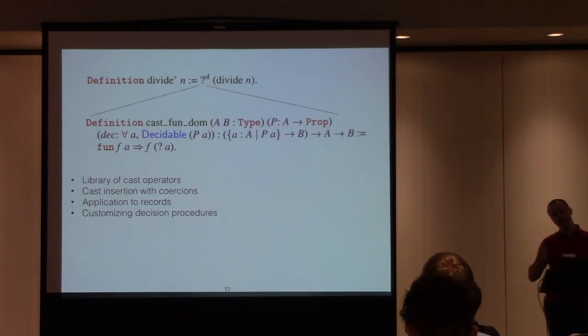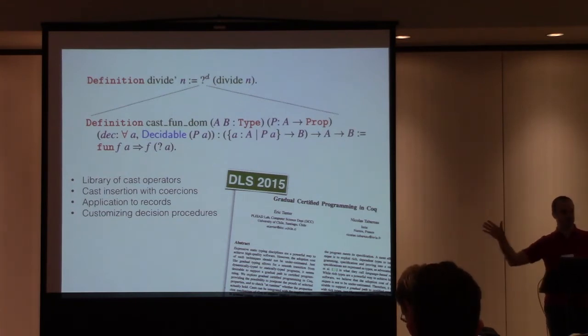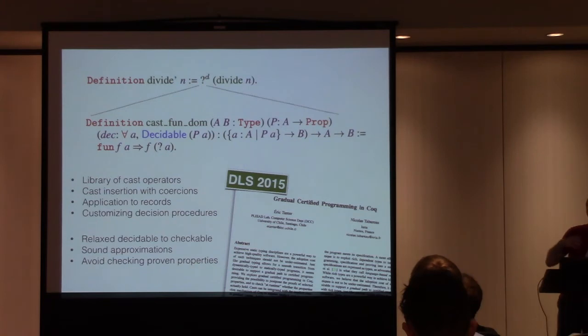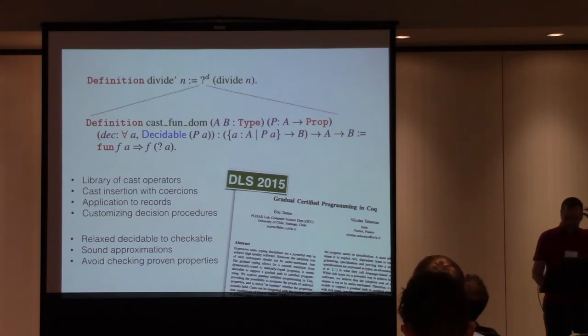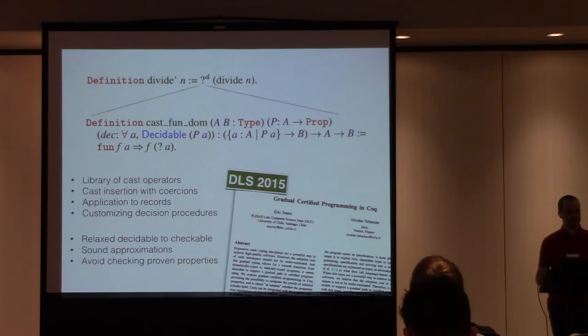We show how this works with records, how you can customize the decision procedures to make things that look not decidable actually be. And that's a paper, so there will be a paper on Coq at the Dynamic Language Symposium at Splash in two months on that part of the work. So this talk is about something else as well, which is not yet written down. Since then, on this part, thanks to the feedback also we got at the Coq workshop, we relaxed decidable to checkable, so actually if you have a safe approximation of a non-decidable property, that's still good to have that. And we can also avoid checking things that you had a cast but actually in between you've proven, then you don't need to actually check, you've proven. So it supports more the gradual part of things. So that's part one of the talk.